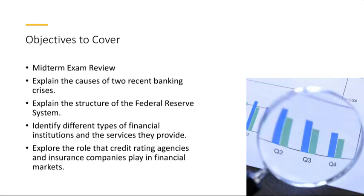We'll conclude the week by unraveling the vital roles of credit rating agencies and insurance companies in financial markets. Credit rating agencies like Moody's or S&P Global play a crucial role in assessing the creditworthiness of entities — meaning the ability of a company or government to pay back its debts — which aids investors in making informed decisions. Insurance companies contribute significantly to financial stability by providing risk mitigation through policies covering health, property, life, and liability.